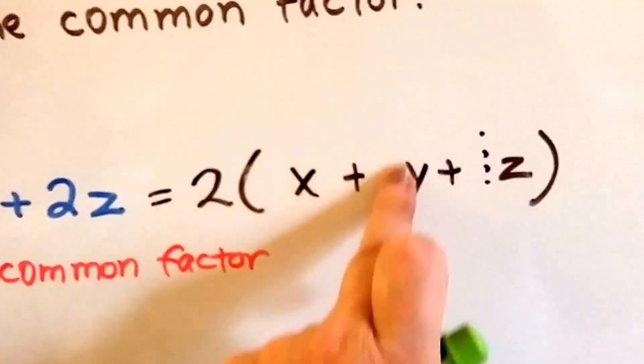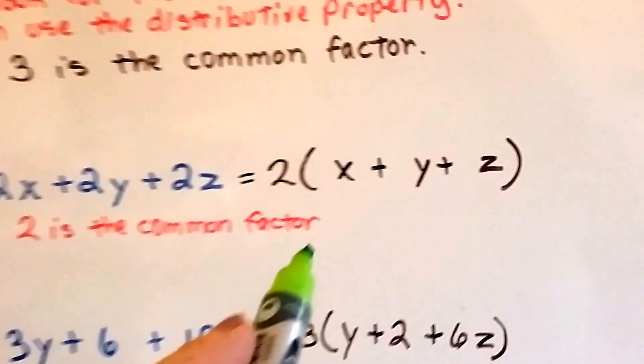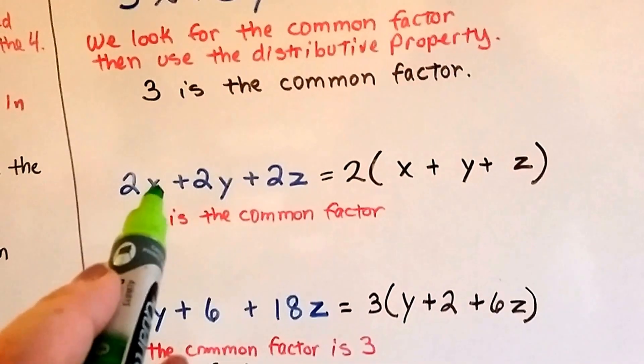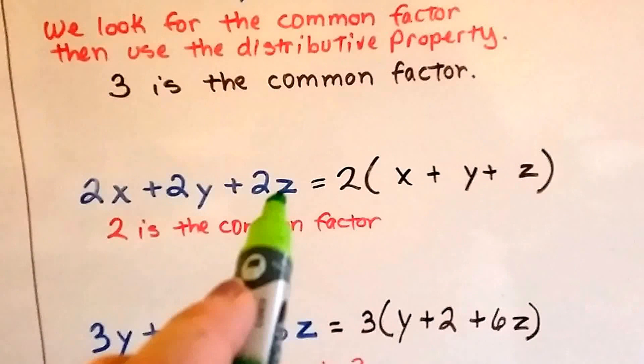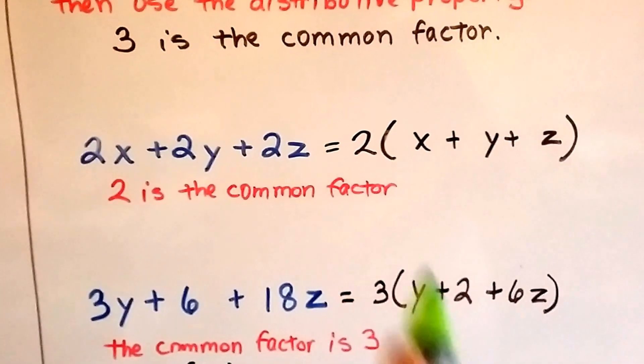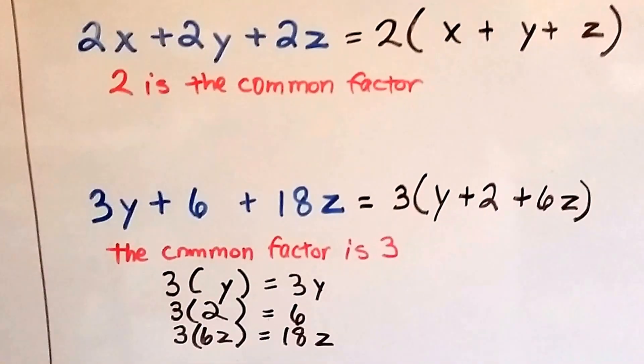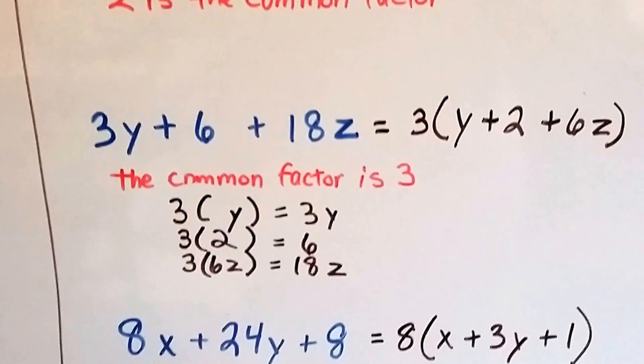So the way to check it is, we try multiplying it. 2 times 1x is 2x, 2 times y is 2y, and 2 times 1z is 2z. So we know we did it right. That's the answer. That's the equivalent expression.